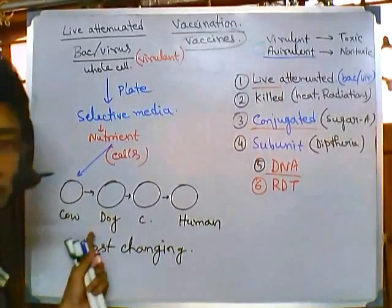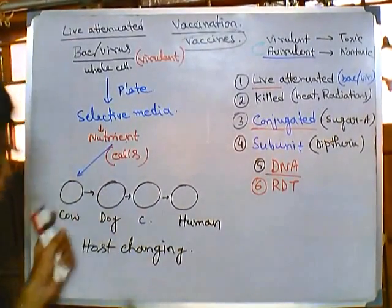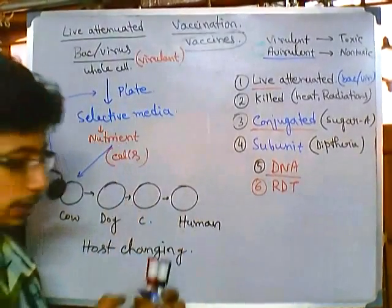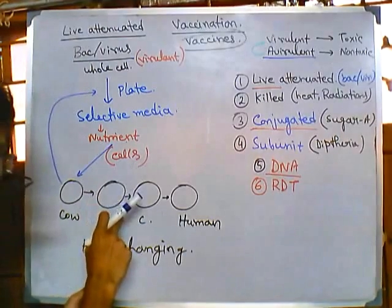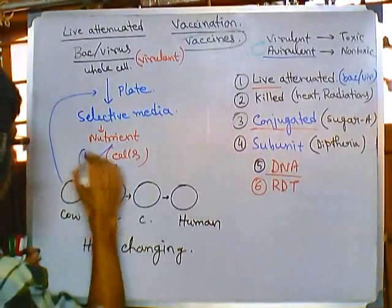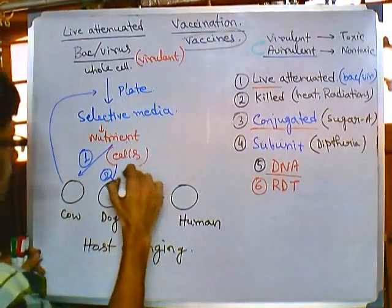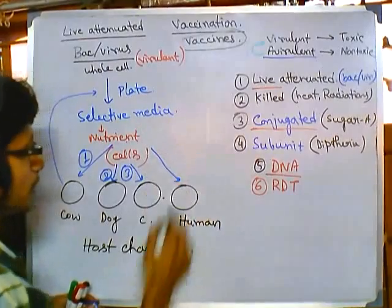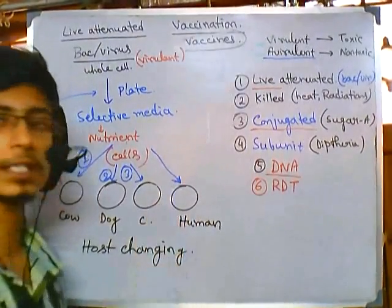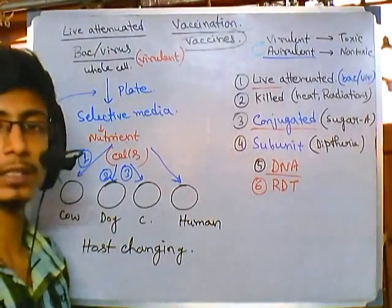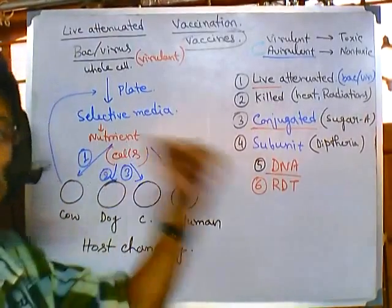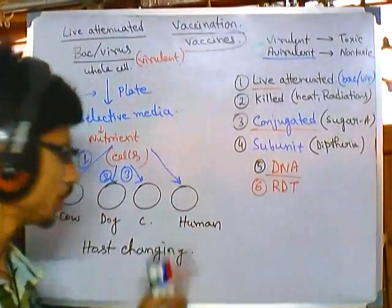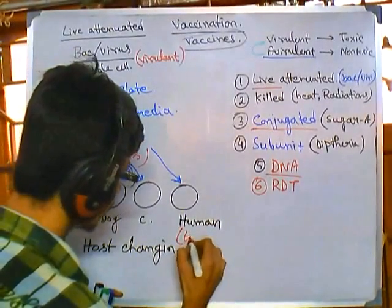We take the cell suspension and put it into the cow. The cow becomes diseased. We then isolate from the cow and replate it for several generations. Then we take it and put it into another host — the dog — and replate for several generations again. Then we move to a third host system, plate again, and finally put it into the human system. Before putting it into humans, we run a trial to check whether it is still toxic. Most of the time, due to host switching, they lose their virulence for humans — they become avirulent.